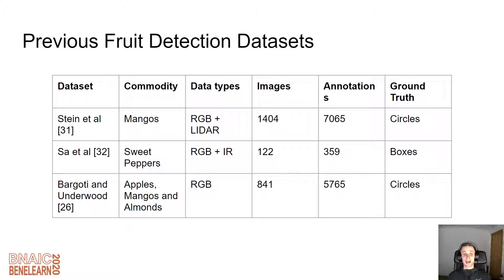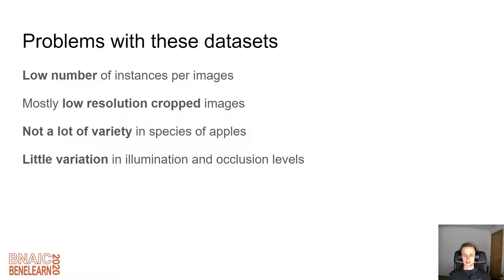The way data is collected in these datasets isn't just from a video stream or a camera — they use LiDAR and infrared. These are great ways of sourcing extra information, however these are all points of failure. When producing an automated picking robot, you don't want to have to maintain a LiDAR, an infrared detector, as well as a camera. If we can reduce these points of failure, all the better, as long as detection accuracy remains high. So, problems with previous datasets: low number of instances per image, very low-resolution cropped images, limited variety in apple species, and limited variation in illumination and occlusion — many are taken in lab-specific environments where lighting is standardized, which isn't useful in the real world.